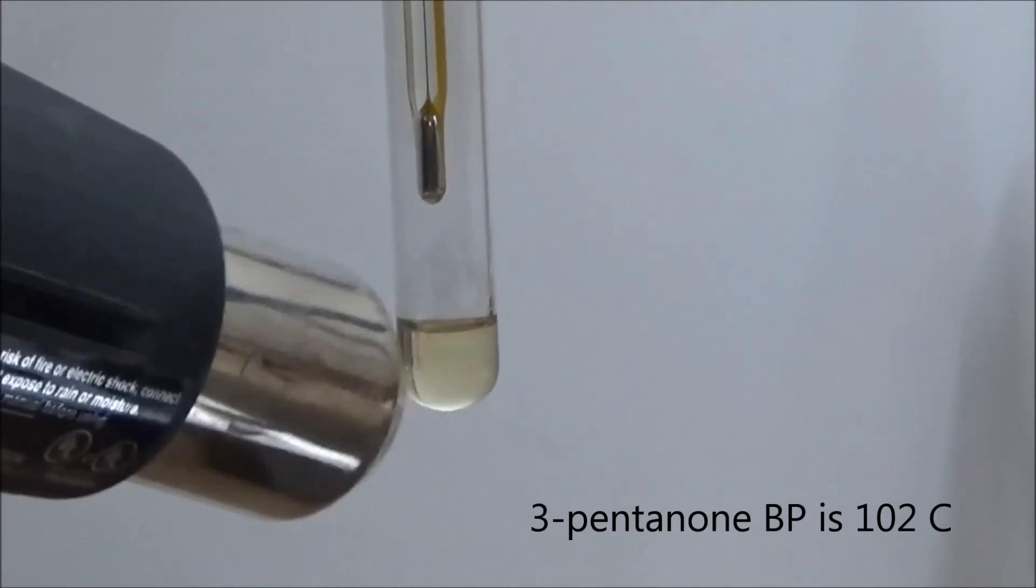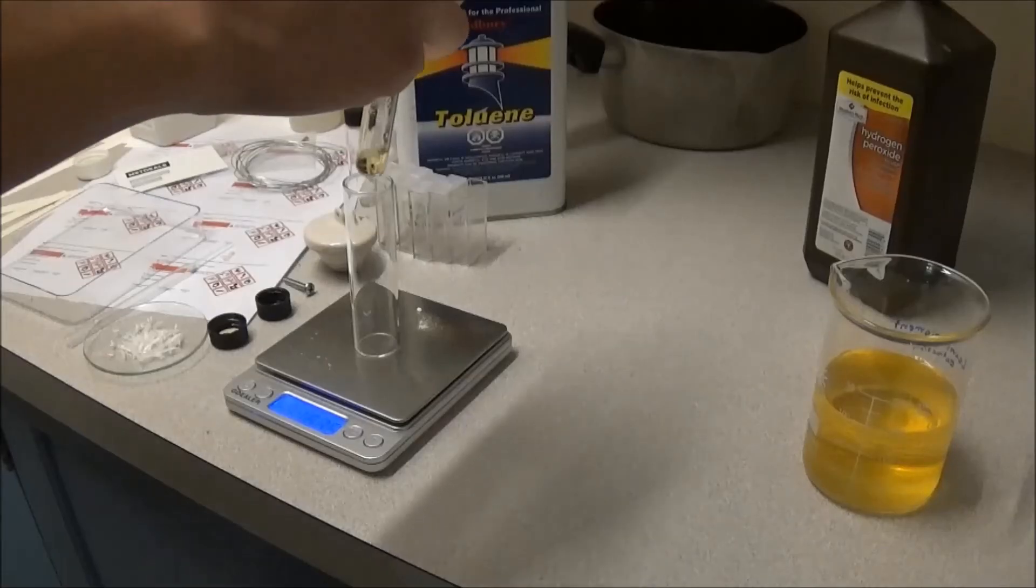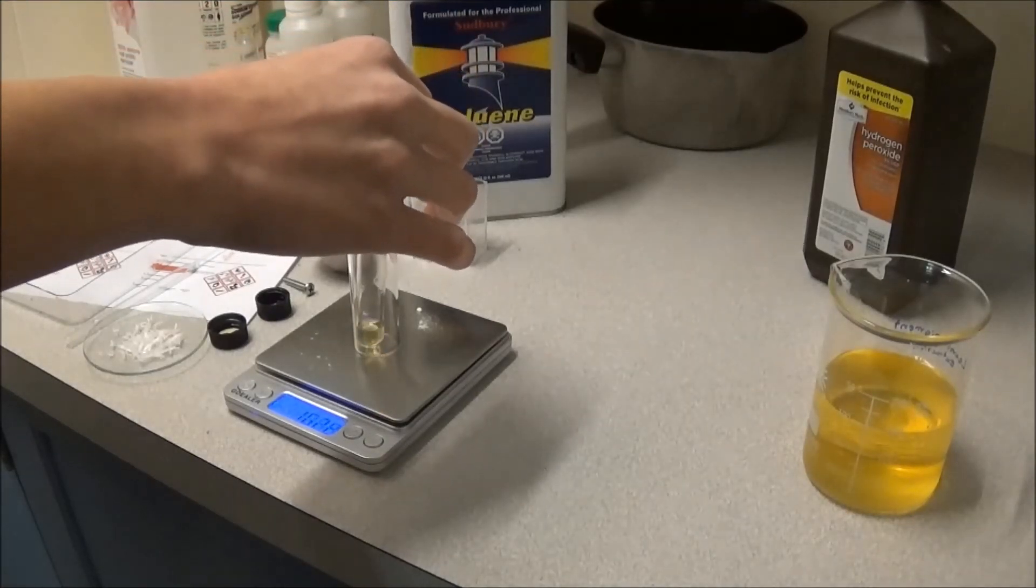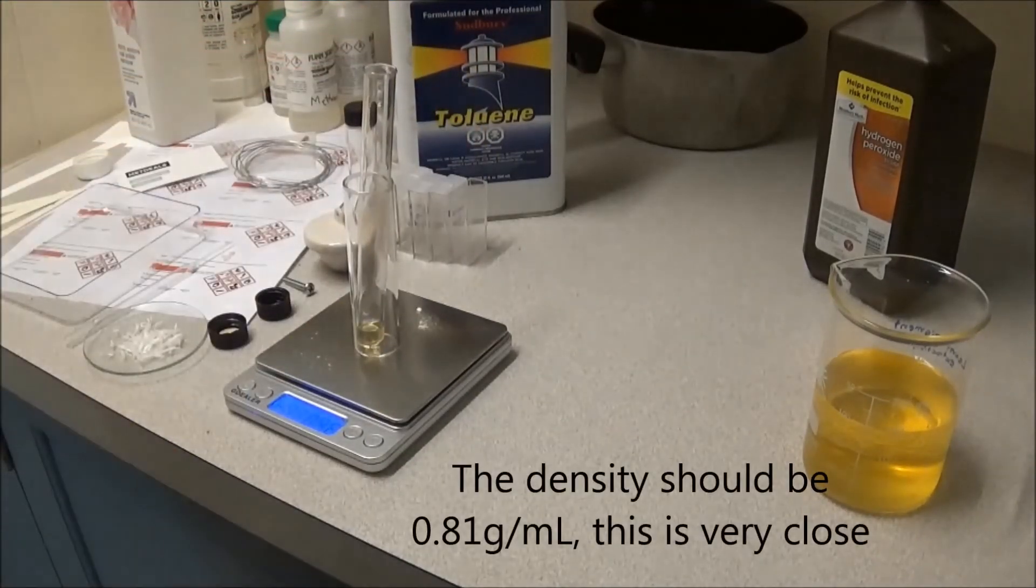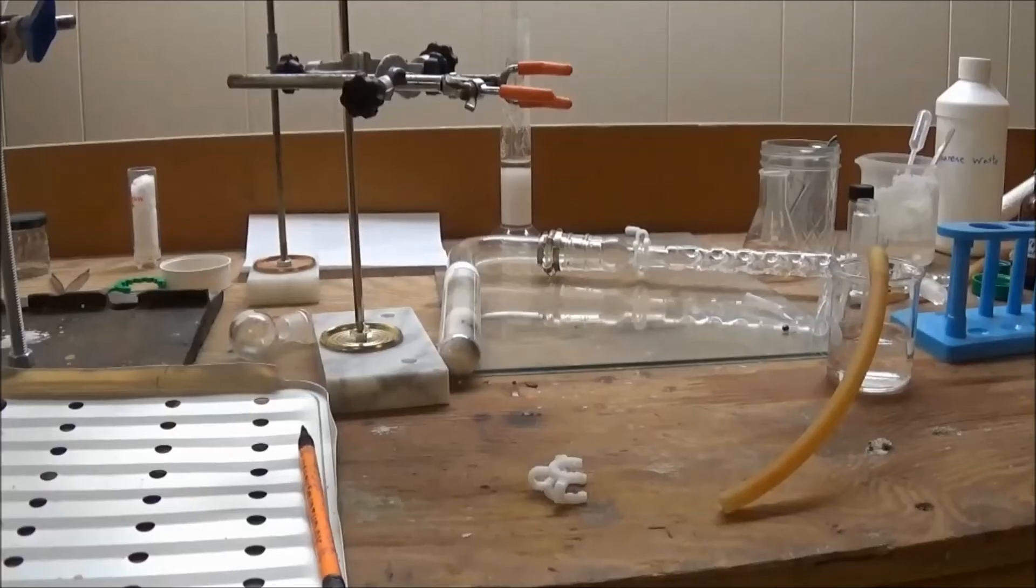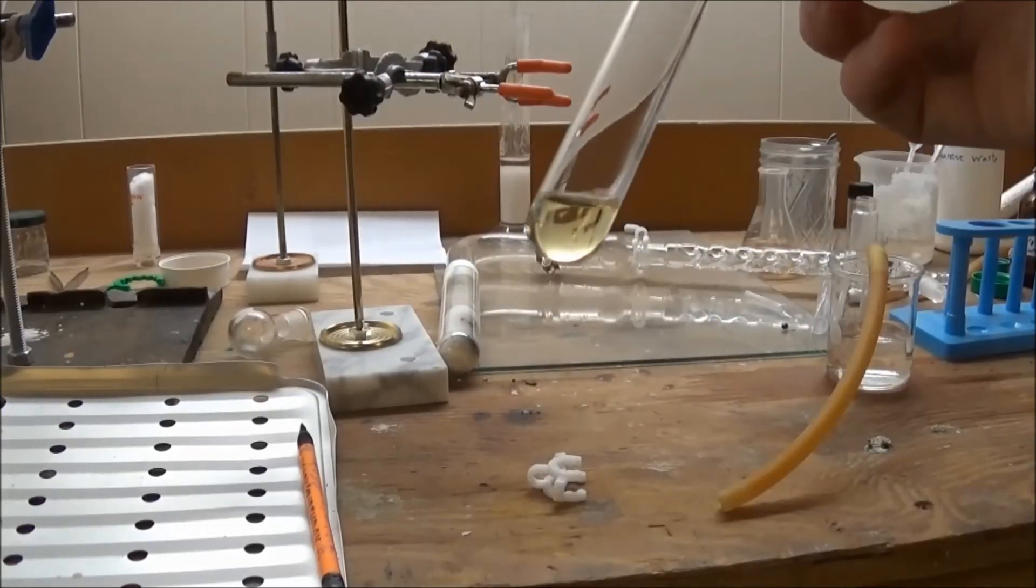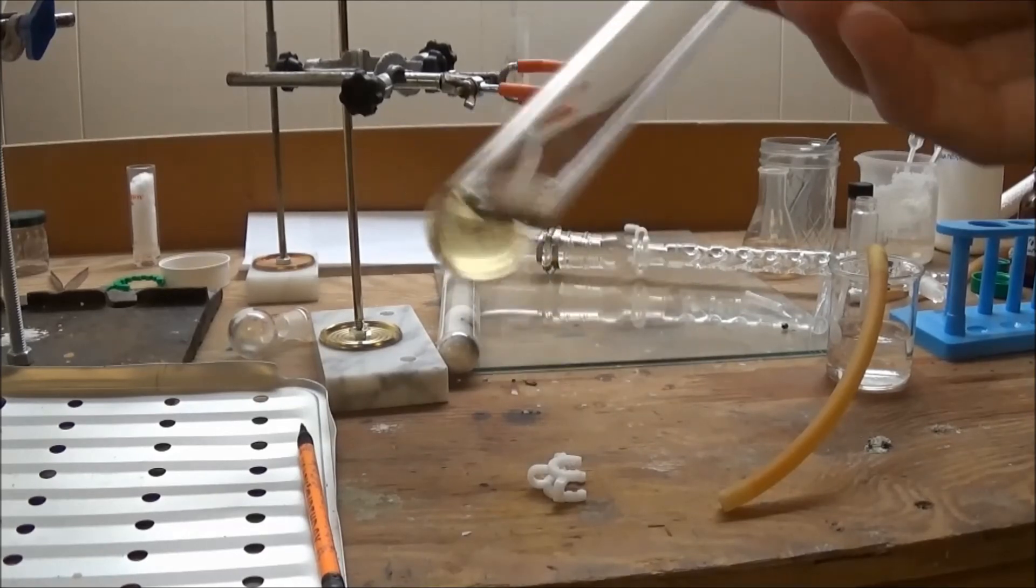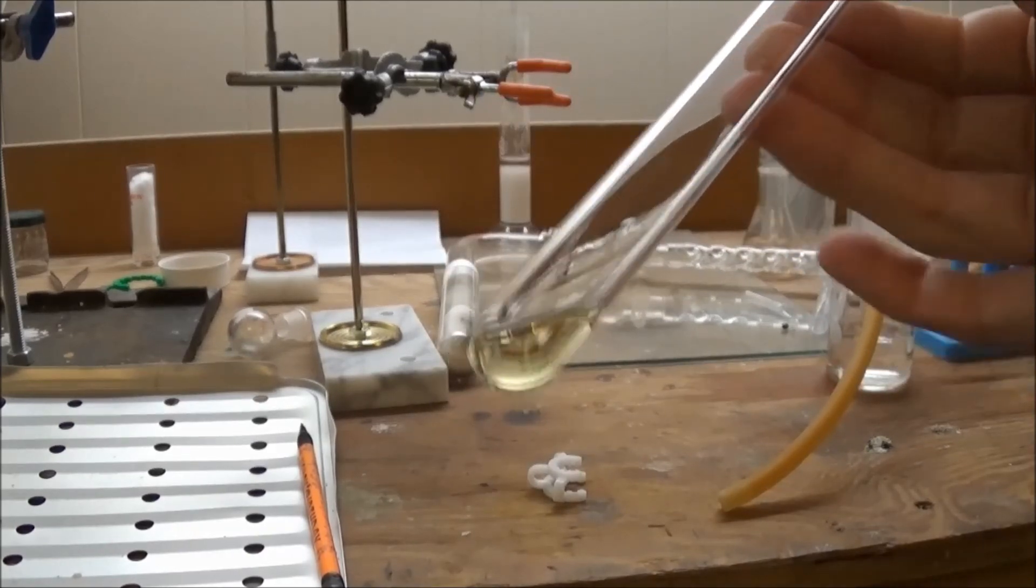Dividing the sample's mass by its volume, I found the density to be about 0.78 grams per milliliter. Given these various properties, the product here is mostly three-pentanone. The yield was quite poor at only 13 percent.